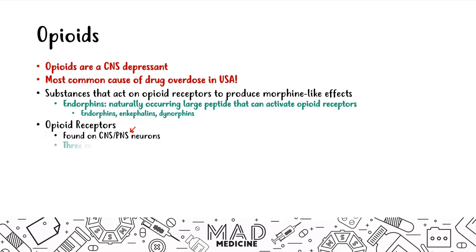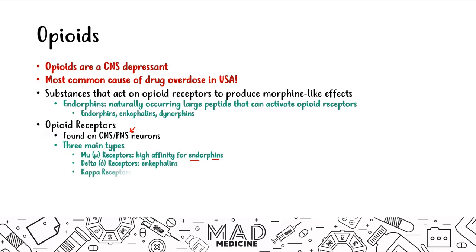There are three main types of opioid receptors. The mu receptor has a high affinity for endorphins, which is what opioids primarily act like. The delta receptor has a high affinity for enkephalins, and the kappa receptor binds dynorphins. When these receptors are activated, they produce euphoria and reduced pain. Understanding the mechanism of action of opioids is very important and high yield.